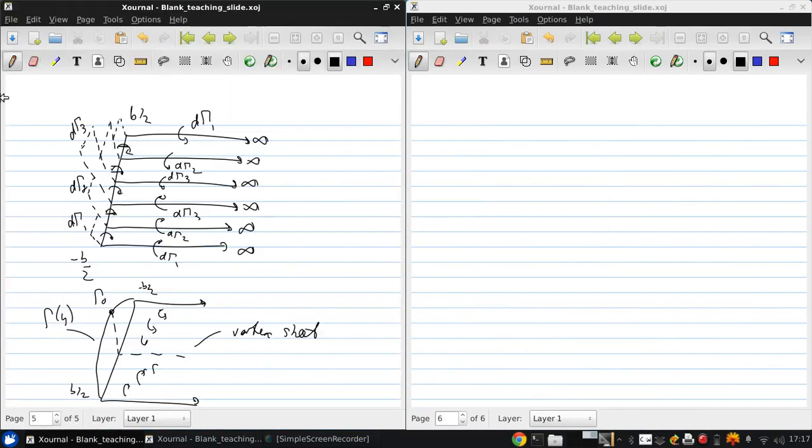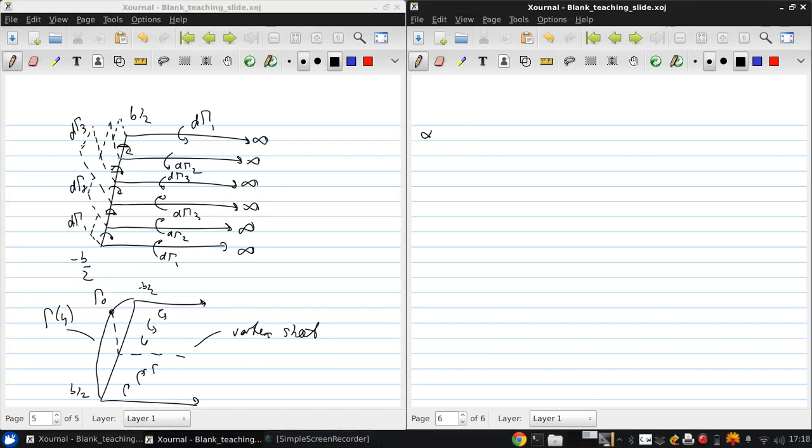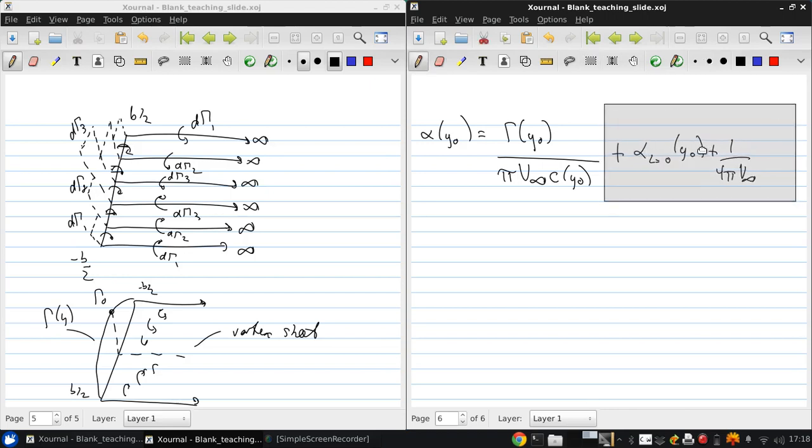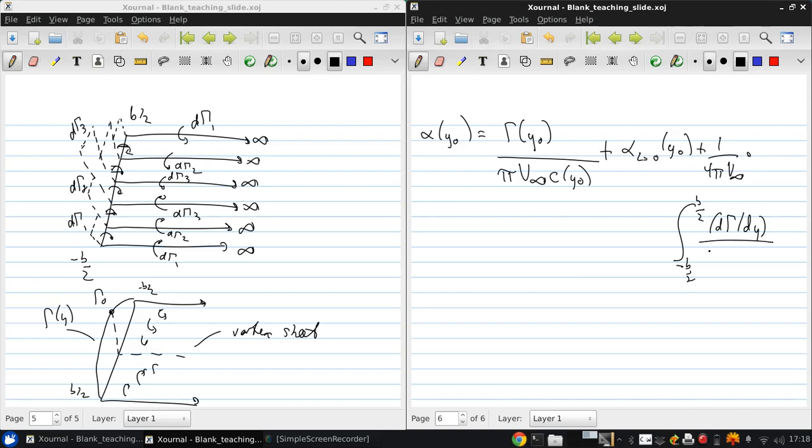What we get is that the angle of attack as a function of y0 is gamma of y0 over pi V infinity times c of y0, plus alpha i of y0, plus 1 over 4 pi V infinity times the integral of negative B over 2 to B over 2 of d gamma dy over y0 minus y dy.